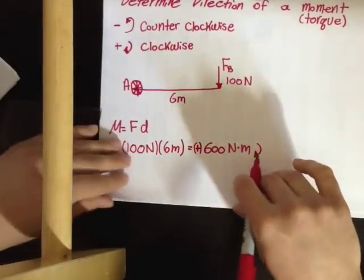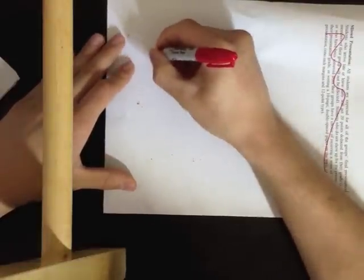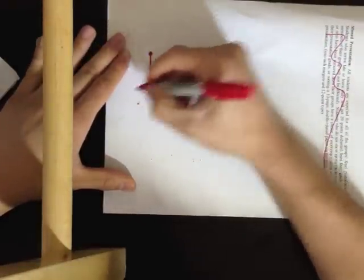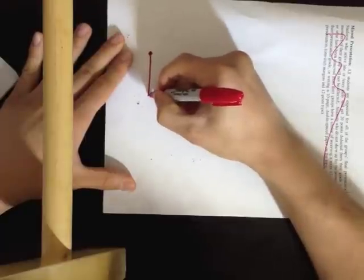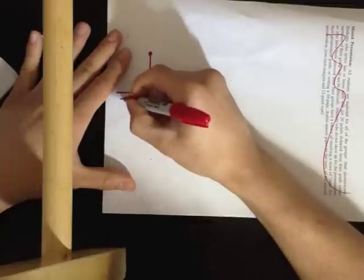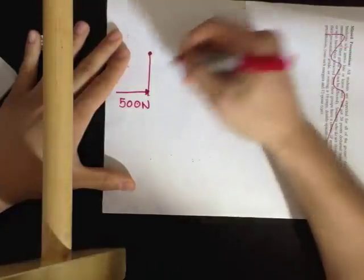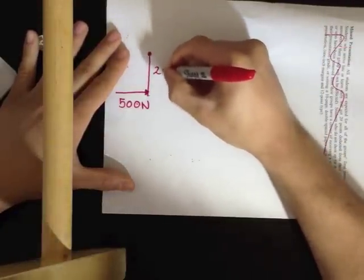Let's do another quick example. Excuse this. Let's say this is my point, this is the distance, and this is my force. Let's say this is a 500 newton force, and this is a distance of 2 meters.